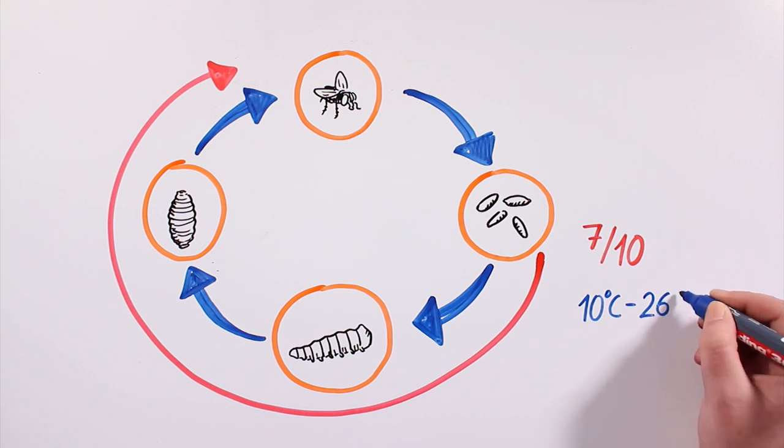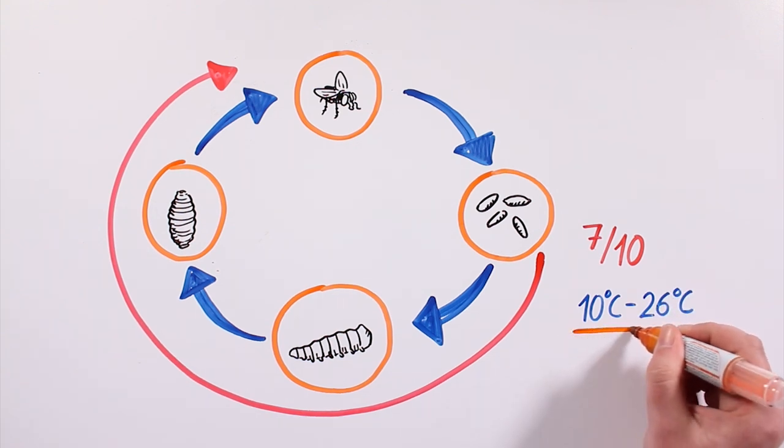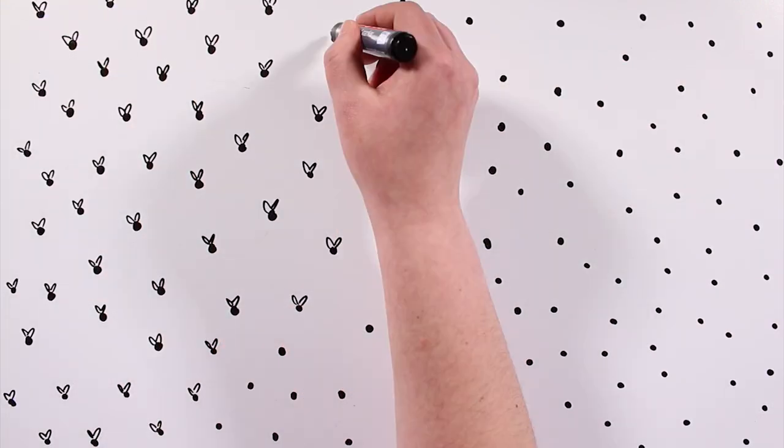It can take them even longer if temperatures are cooler, between 10 and 26 celsius degrees. This data applies to houseflies, but truth be told, there is a lot of different types of flies.